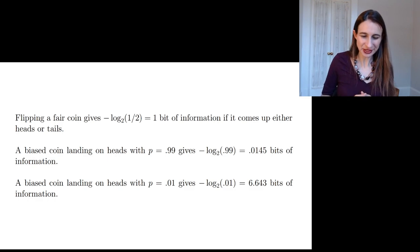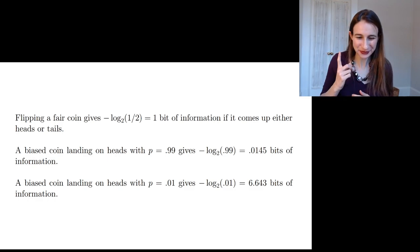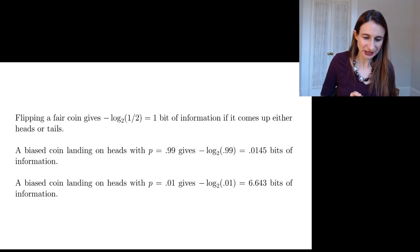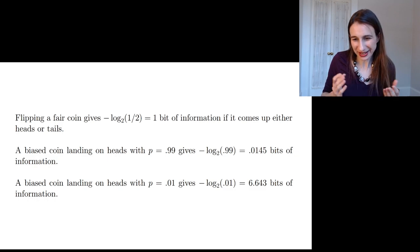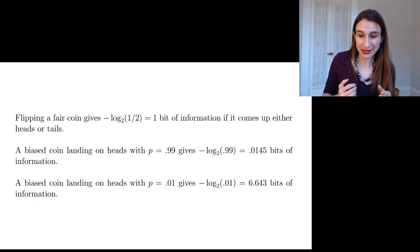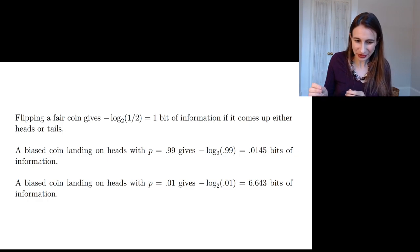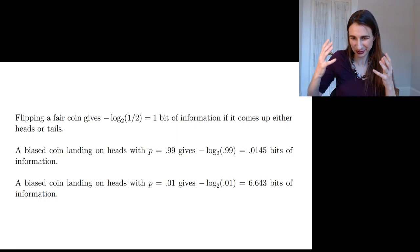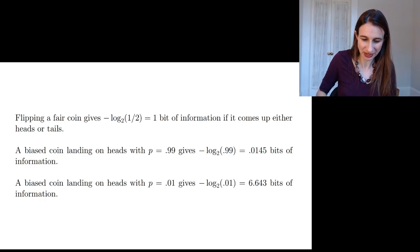So flipping a fair coin, again, you get one bit of information if it comes up either heads or tails. A biased coin landing on heads with a very high probability, that's not going to give you that much information. But if you have a biased coin and it lands on heads with a very low probability and you see that happen, then that's a lot of information. That's really interesting. It gives you a lot of information.